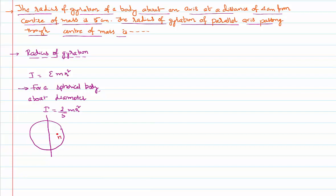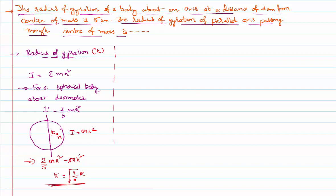Another way of saying this: from the axis, if the entire mass is concentrated at a distance from the axis of rotation, that distance where the mass appears to be concentrated is called the radius of gyration. That means we can write the moment of inertia as mk². So in this case, 2/5 mr² = mk², which gives k = √(2/5) × r. That means at this point from the axis of rotation, the entire mass of the sphere appears to be focused — that is the meaning of radius of gyration.